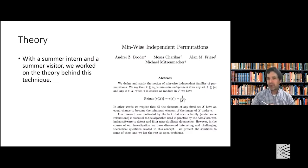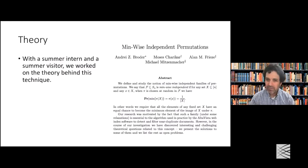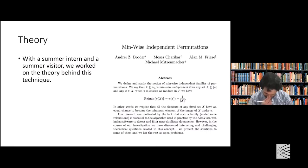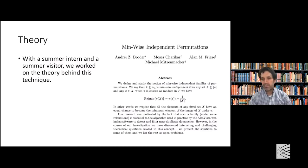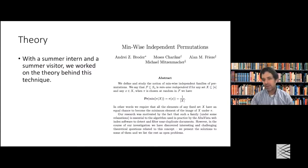The theory work I'll talk about involves a feature called minwise independence: we have some set of objects, and we have some set of permutations that when applied to our collection of objects, each one is likely to be the smallest with equal probability, regardless of what that set is. We'll see in a minute why this is actually useful for the near-duplicate document detection problem.